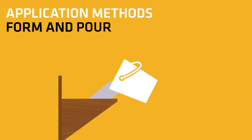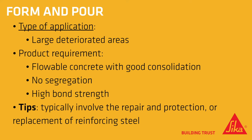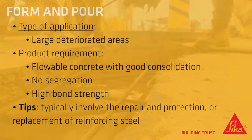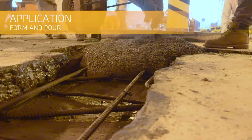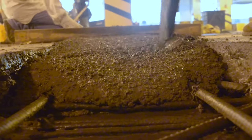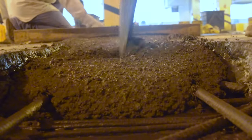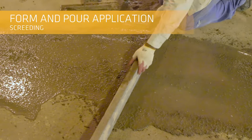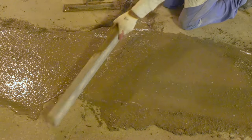Form and pour applications generally address large deteriorated areas. They require a flowable concrete with good consolidation and no segregation, and a high bond strength is also necessary. Structural applications typically involve the repair or replacement of reinforcing steel or the insertion of dowels. Slowly pour repair material into the form or repair area and fill with material. Screed the surface of the material to level it with the substrate, then apply the desired finish to the exposed surface.